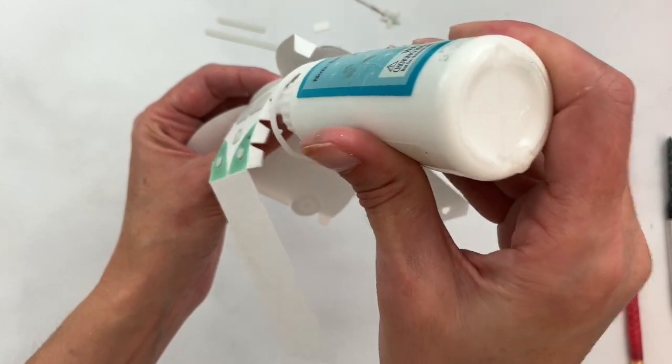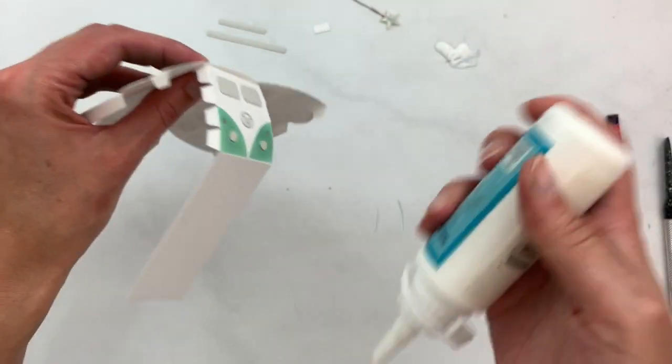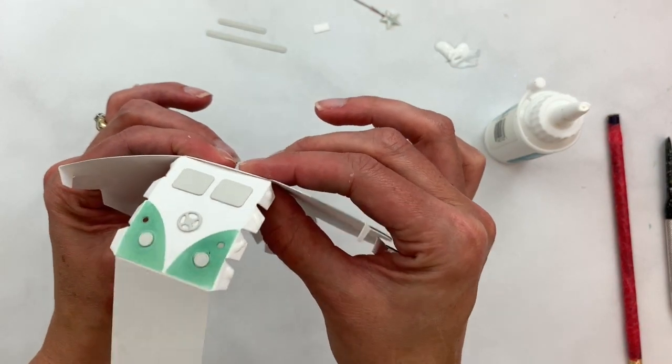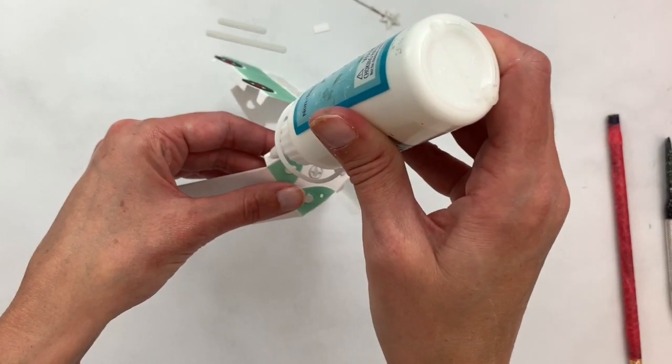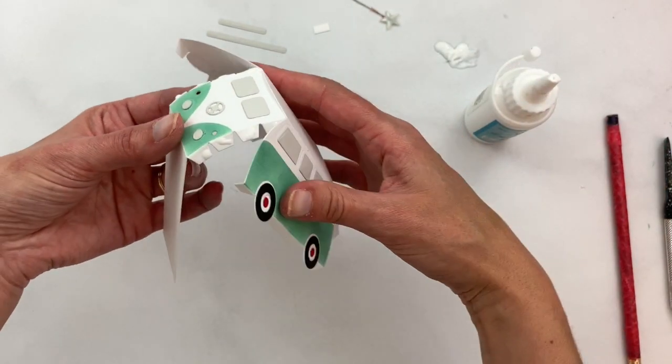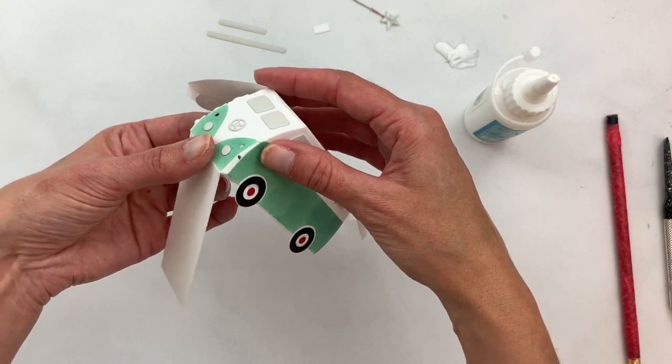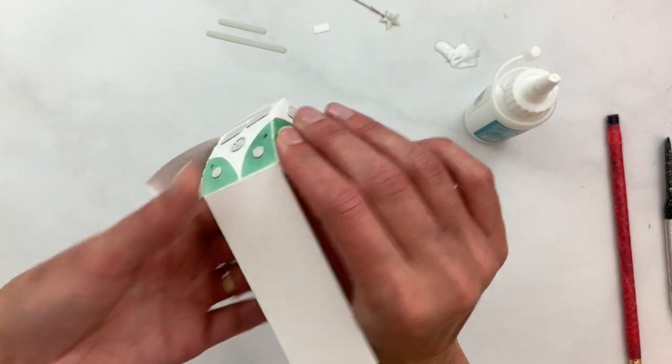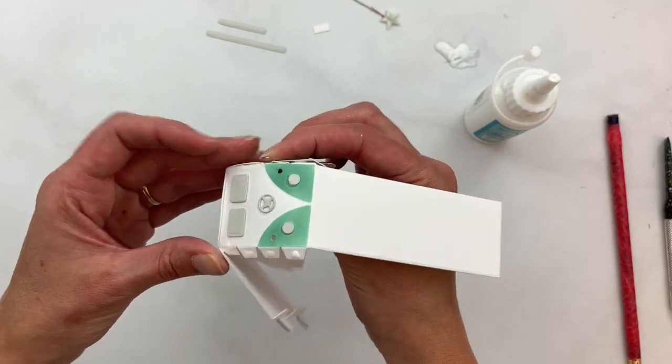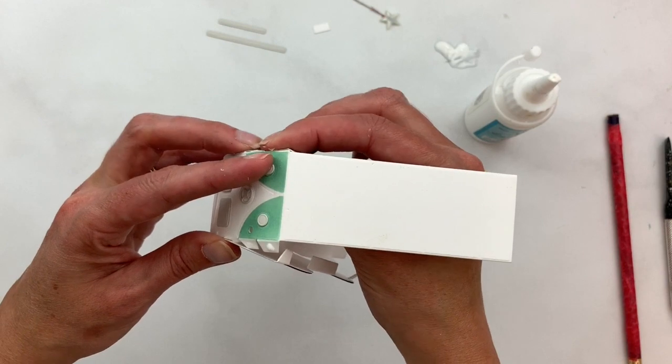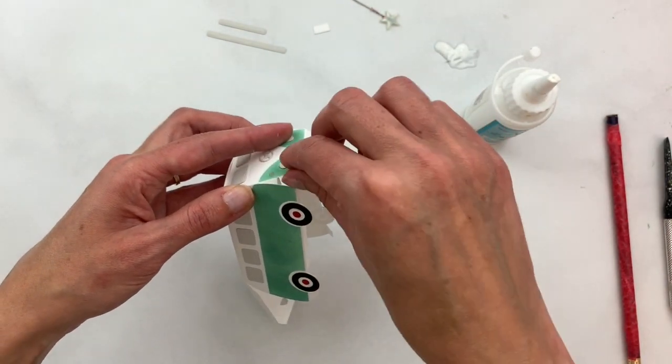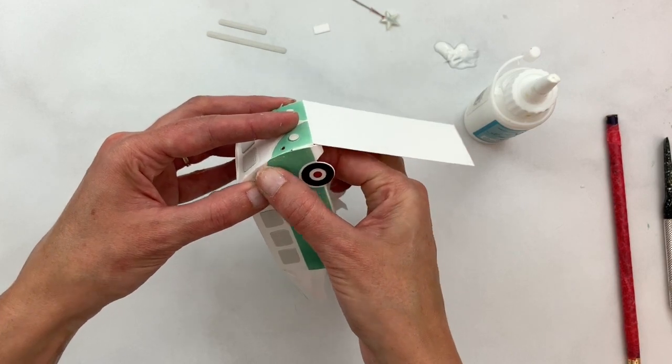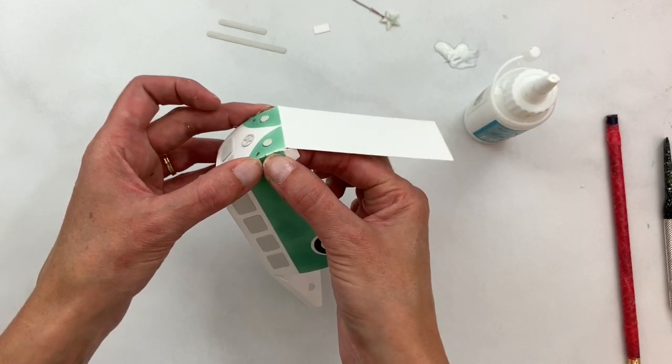Okay, and then these tabs, go ahead and put some adhesive on those as well. You might want to give that a little pinch and let it dry. And then these tabs just get lined up along this curve. You can squeeze it from the inside to get a nice tight fit. I'm going to squeeze that for a little bit and let that glue set.